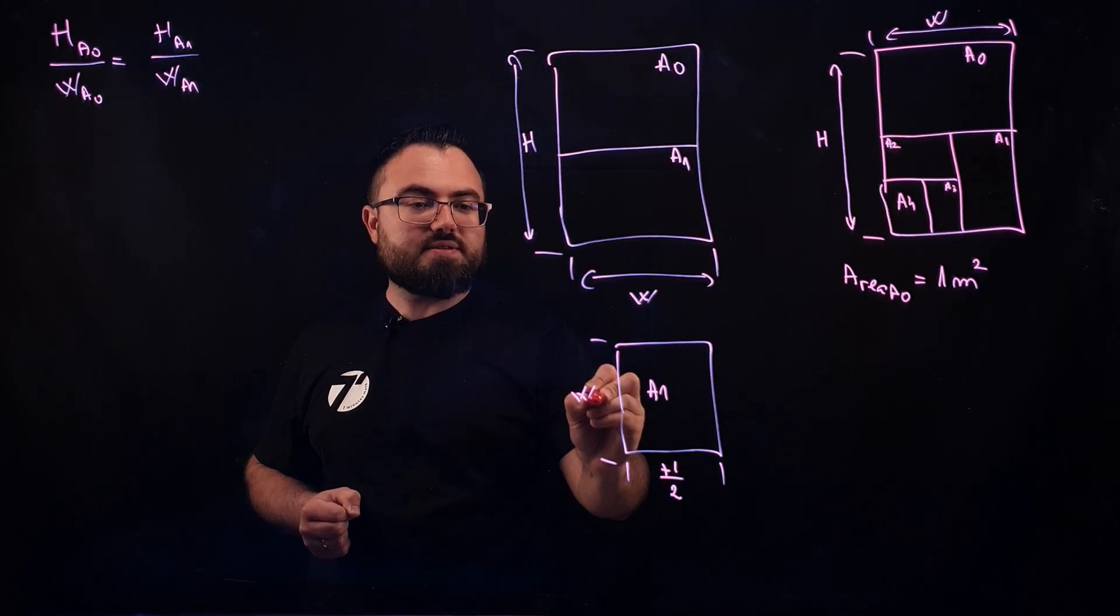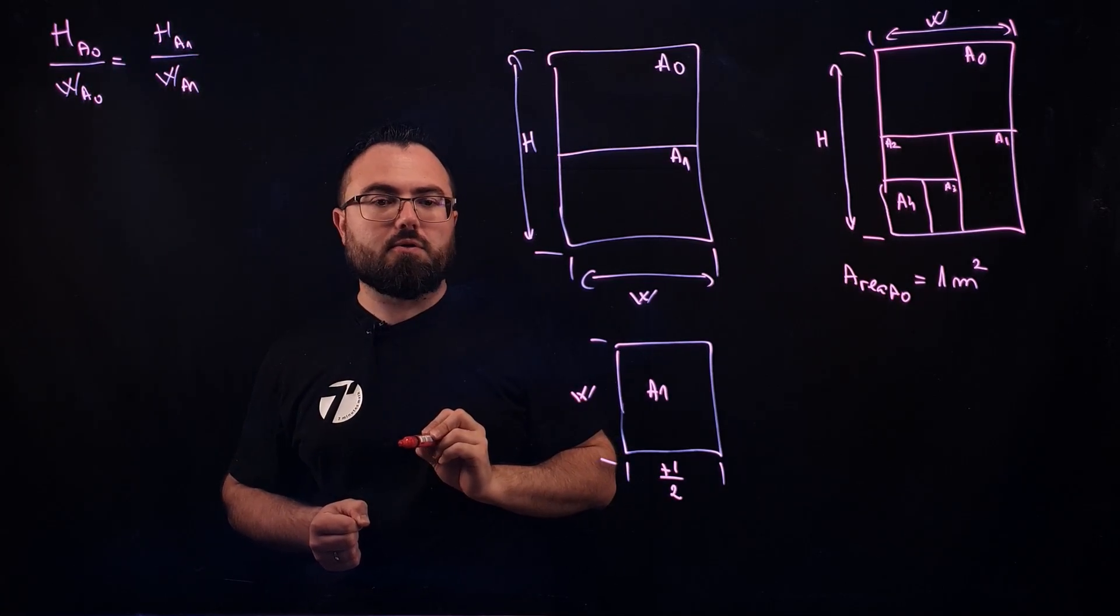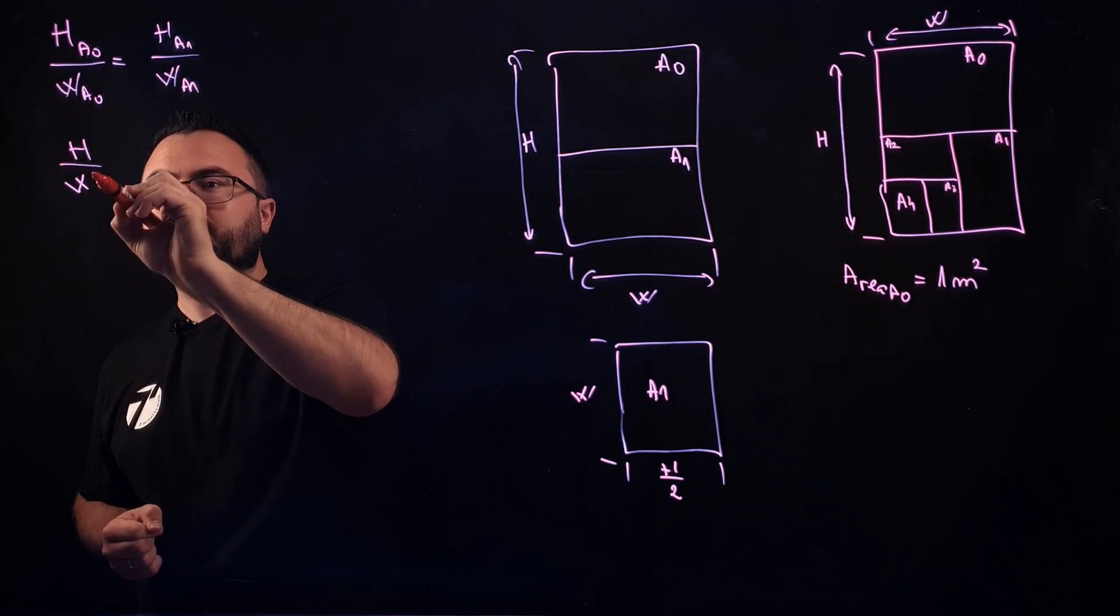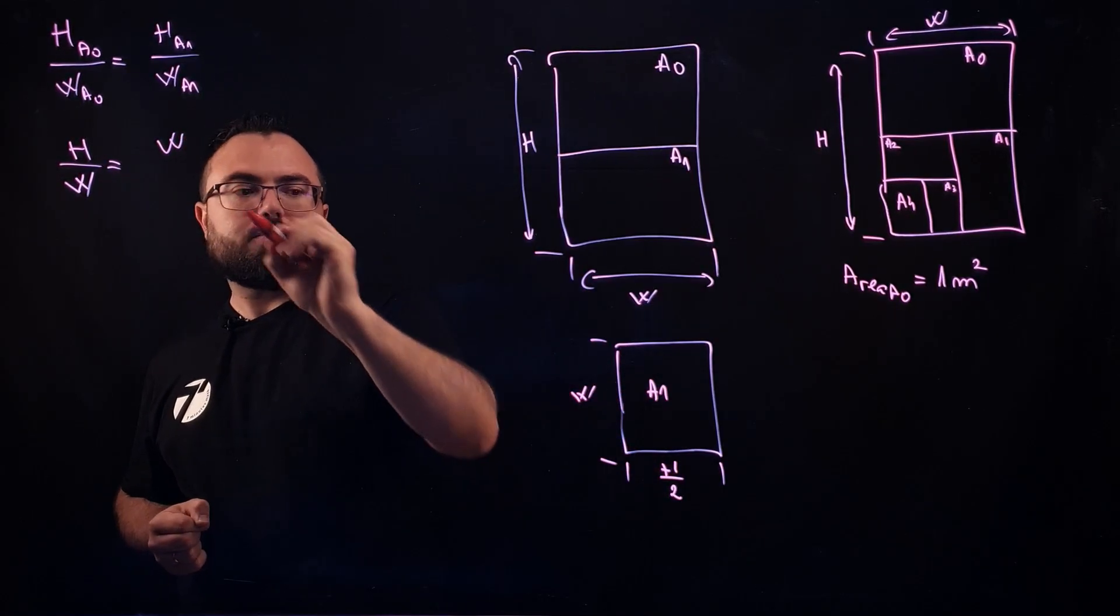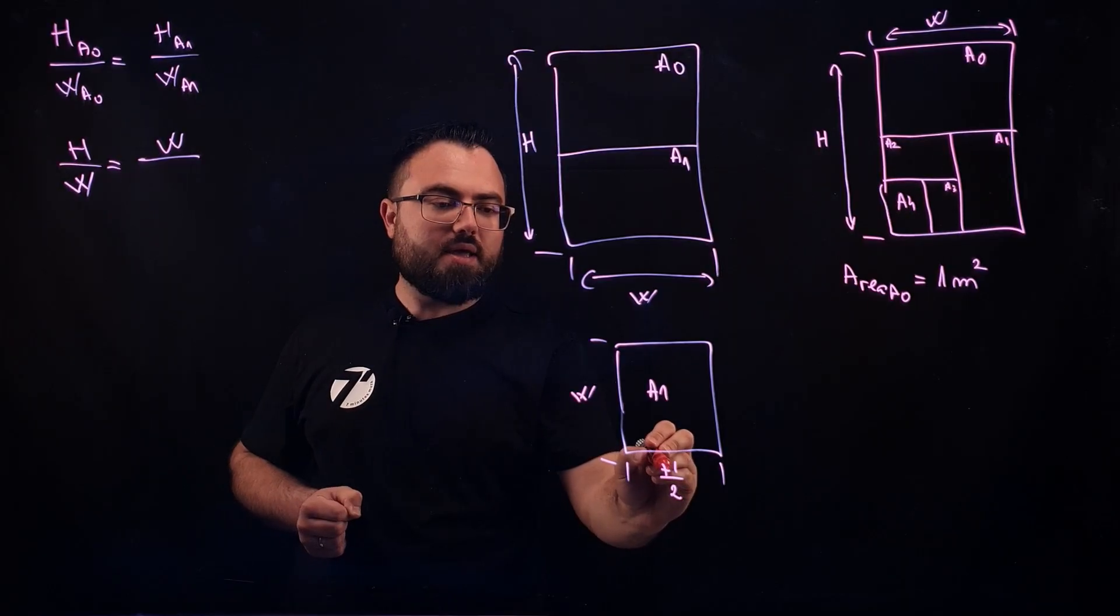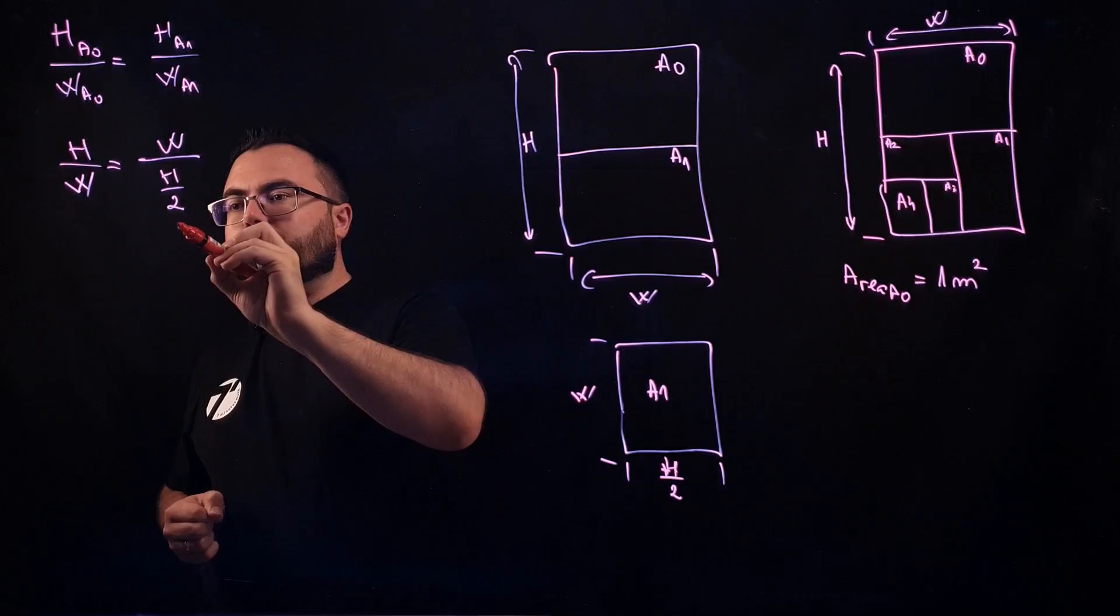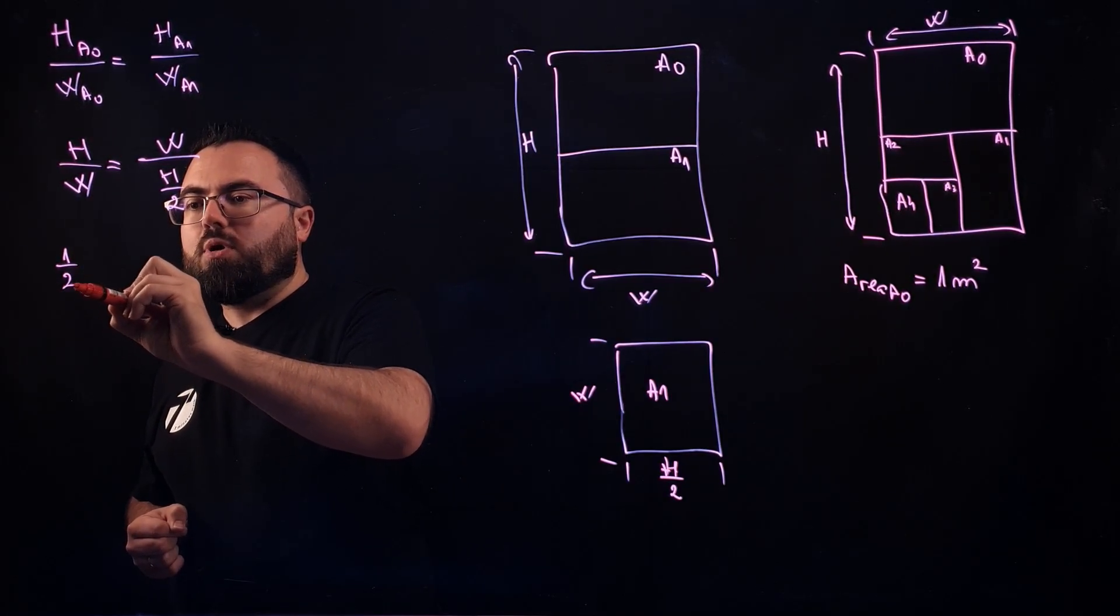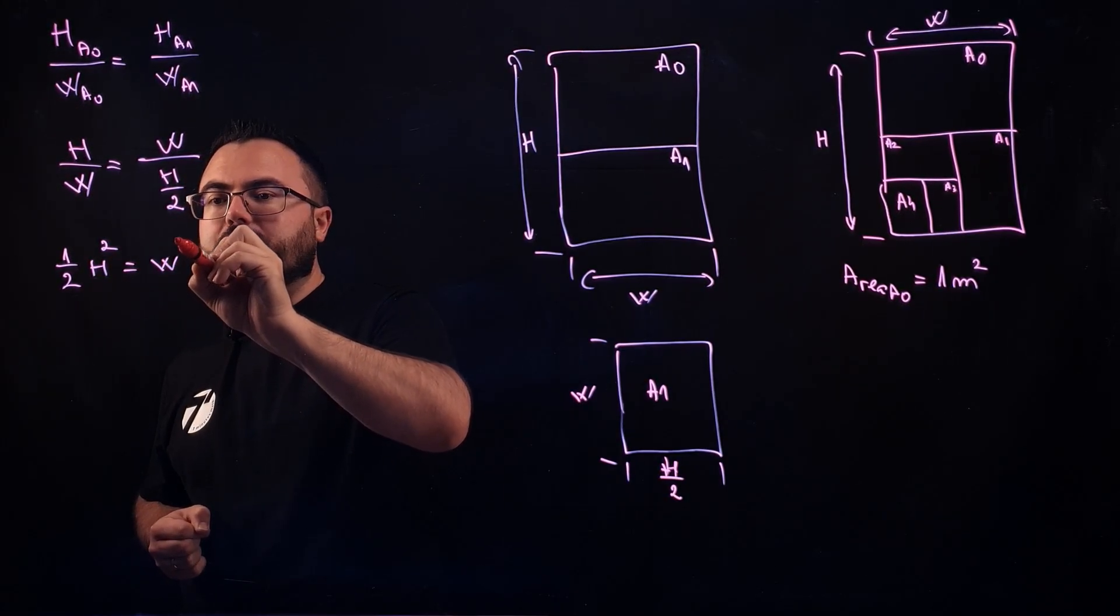Let's see what these actually would mean considering this equation right over there. We have the H of A0 divided by the width of the A0 equal to the width, which is the actual height of an A1 divided by H over 2. And that brings us to the next step, which we can just multiply diagonally. We have 1 over 2 H squared equal W squared.